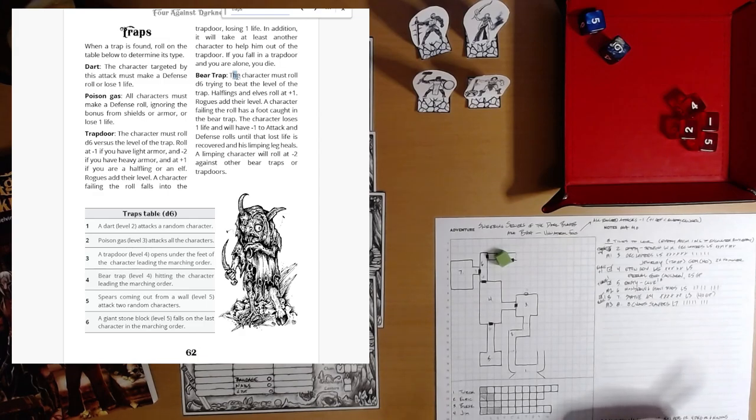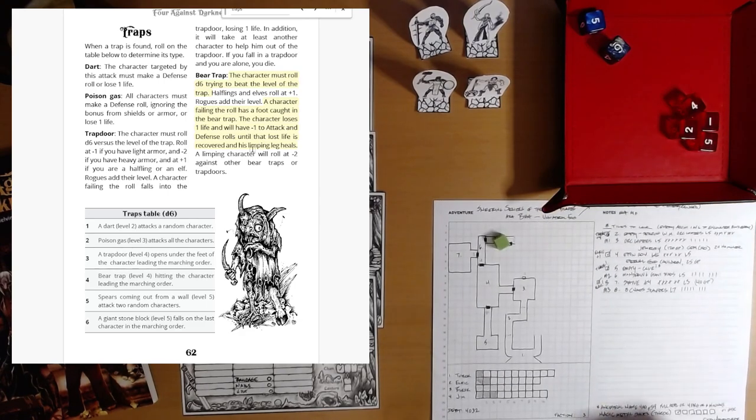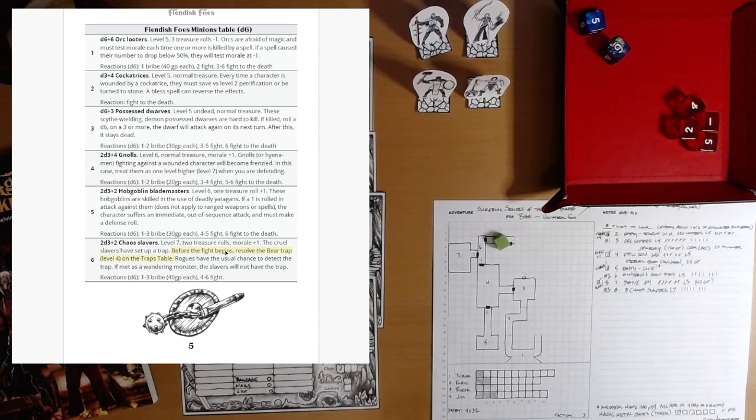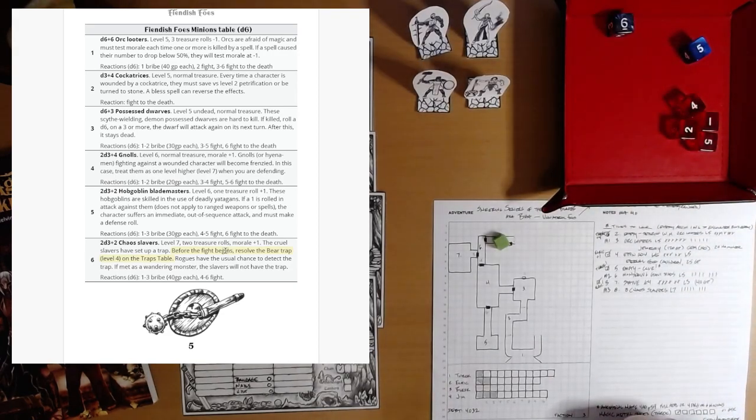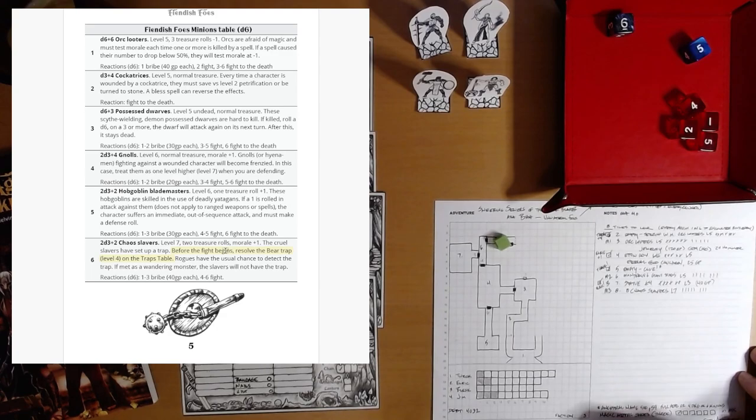Bear trap. The character must roll D6 trying to beat the level of the trap. Character failing the roll has a foot caught in the bear trap, loses one life and will have minus one attack and defense rolls. Throck is in the lead, he's the one that triggers the bear trap. Six. That explodes, but he doesn't need it. He beats the level. Thank goodness. Throck has been great at avoiding traps so far and smashing things.